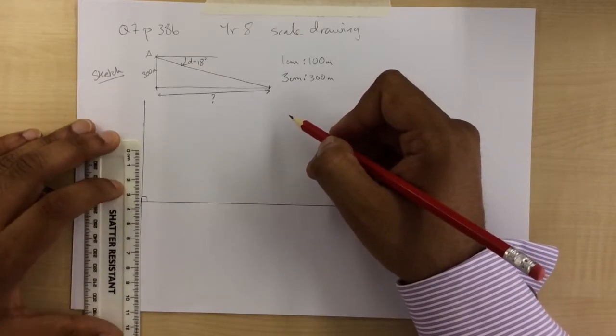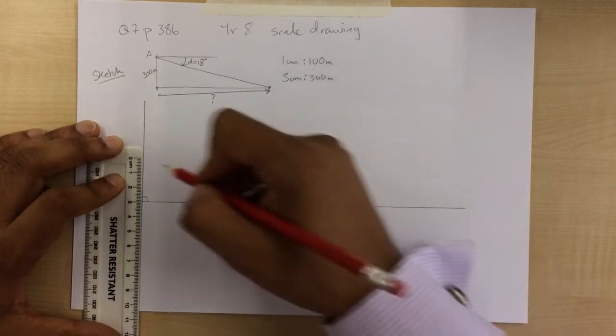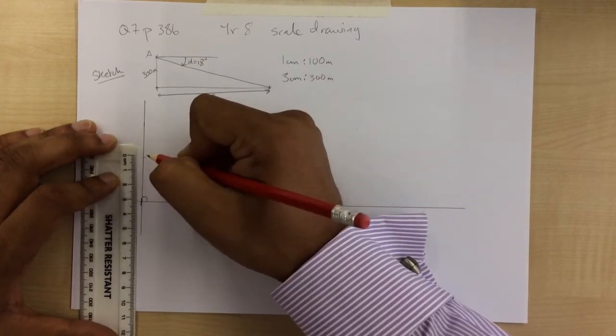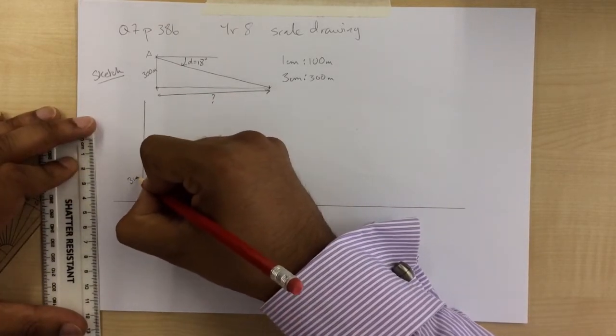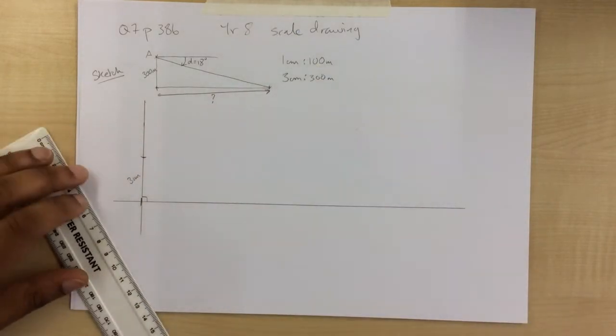OK, so I need 3 centimetres. I measure with my ruler 3, from 3 up to here. That's 3 centimetres. And I've marked that there. OK. Now,